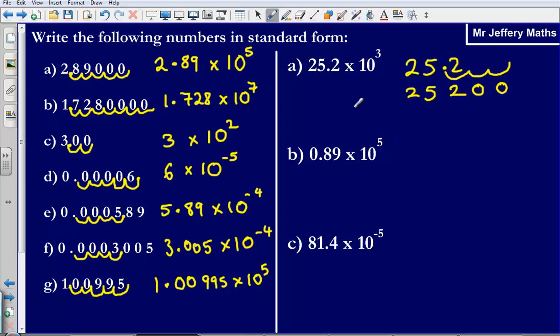Now what we then need to do is just do what we did in the previous video, which is to say, okay, I need to write 25,200 as a number in standard form. So I need to put my decimal point onto the first number that's not a zero and then move that decimal point over 1, 2, 3, 4 places.